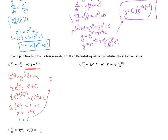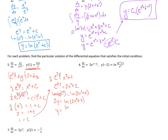Plugging c back in: one-half e to the 2y equals x squared plus 1. Multiplying both sides by 2 gives e to the 2y equals 2x squared plus 2. Taking the natural log of each side, 2y equals ln of 2x squared plus 2. Dividing by 2 gives y equals ln of 2x squared plus 2, all divided by 2.